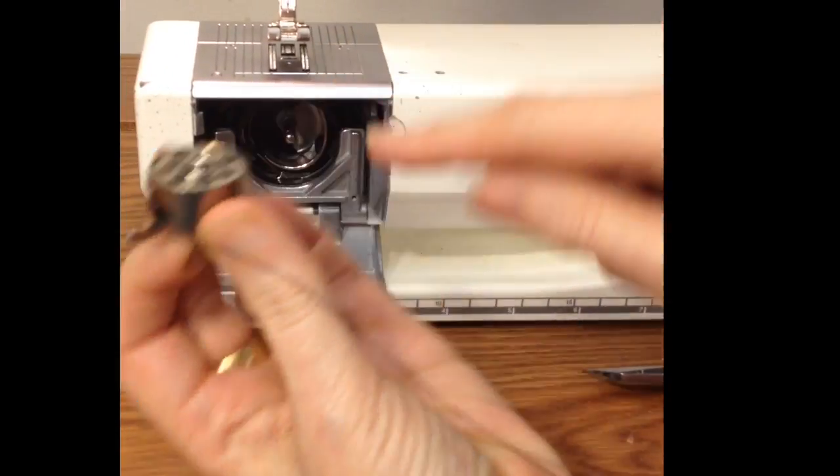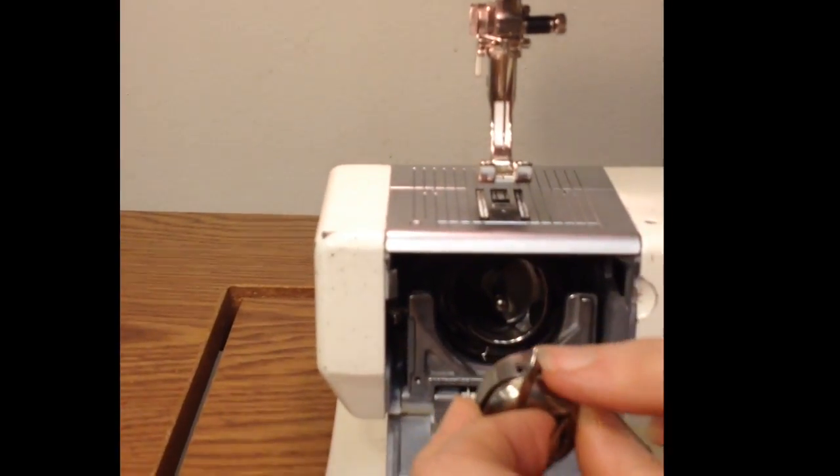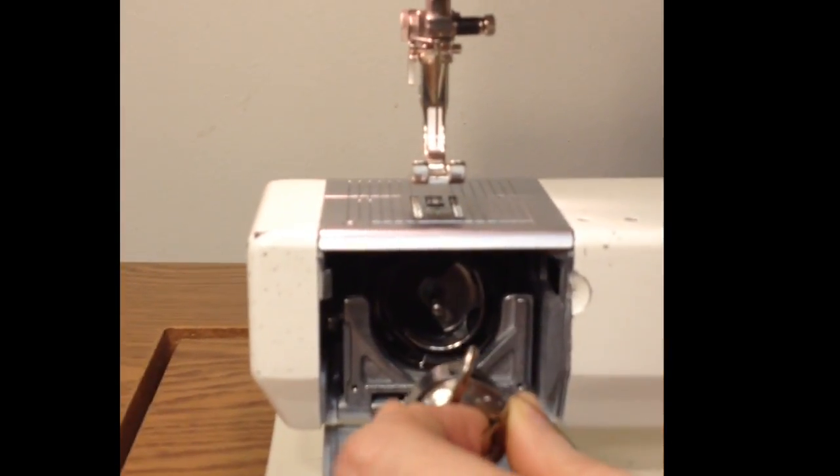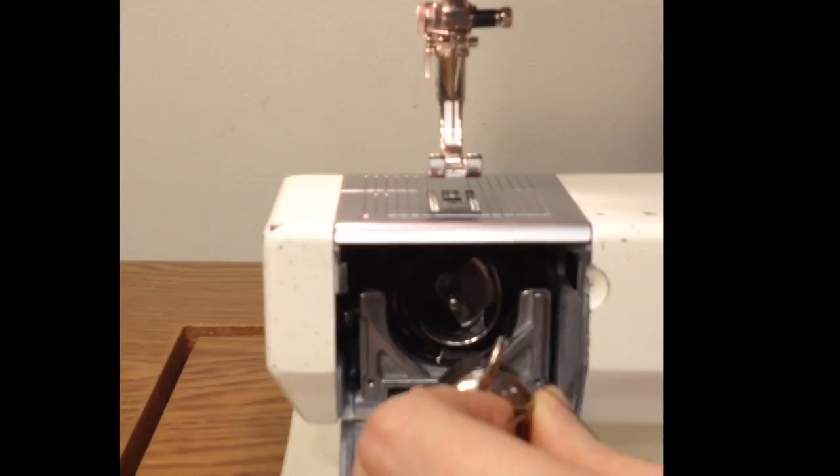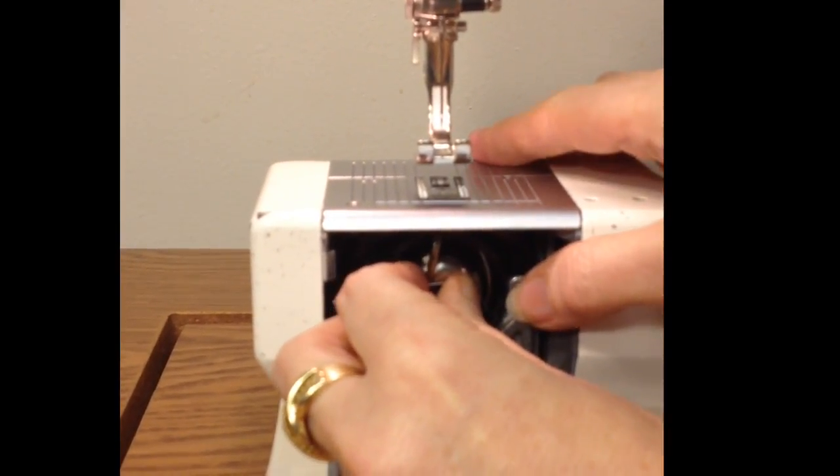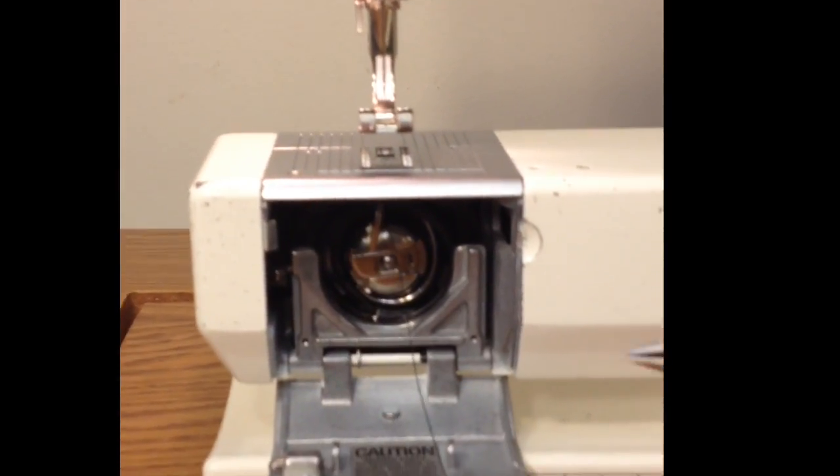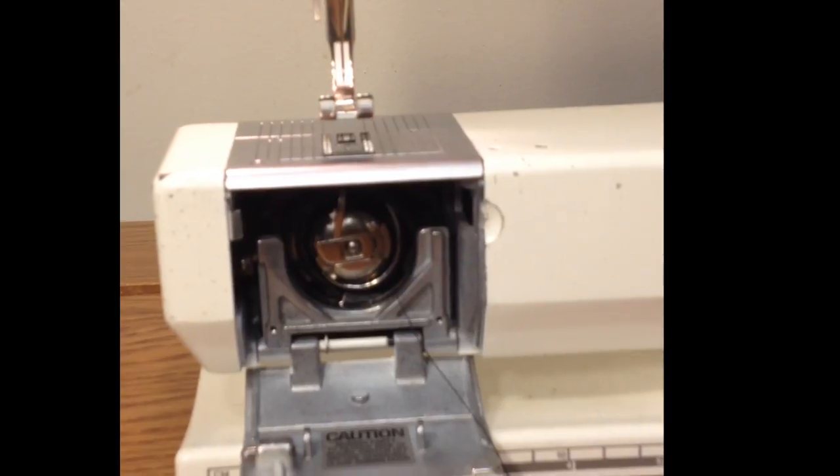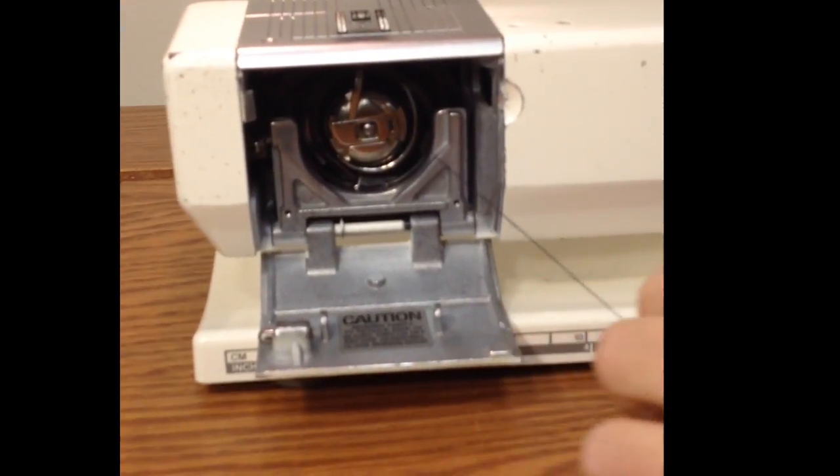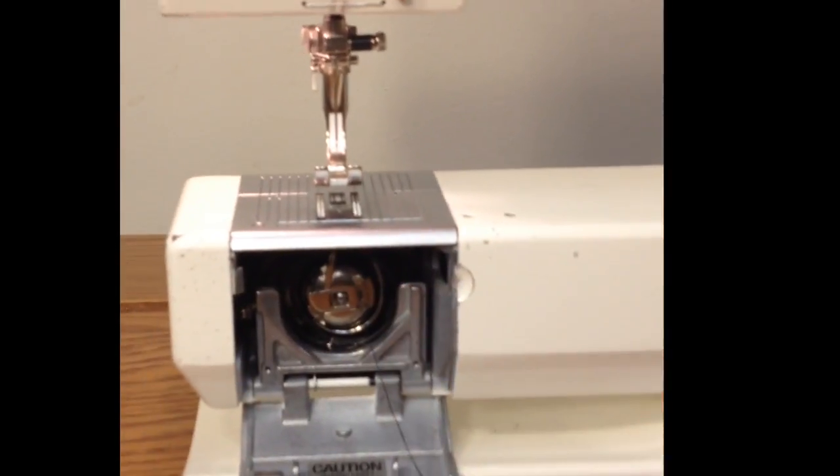Then the center of the bobbin fits on this sprocket here. This little finger points up to the ceiling as if to say, we're number one. And that slides in and there should be a satisfying click if it's in place. You don't want long tails so you just cut those off. And that's how you wind the bobbin and how to get it back in the machine.